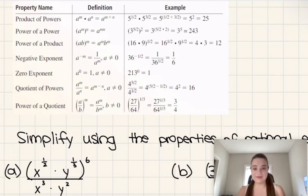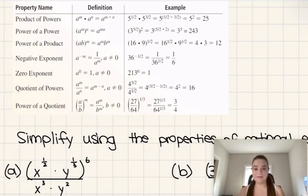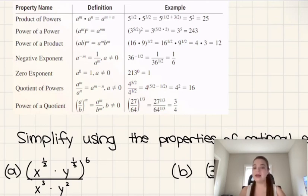Then we have the negative exponent property, which states that if we have a negative exponent, it is the same as taking the reciprocal and having a positive exponent. Then there's the zero property, which states that anything to the power of zero is equal to one — other than zero itself, since zero to the power of zero is undefined.